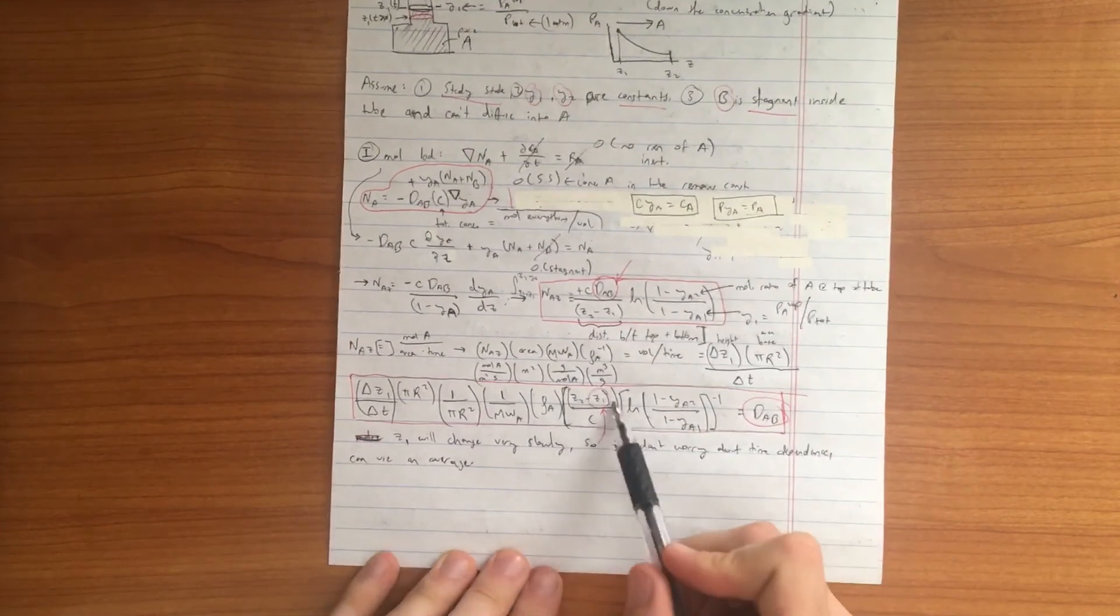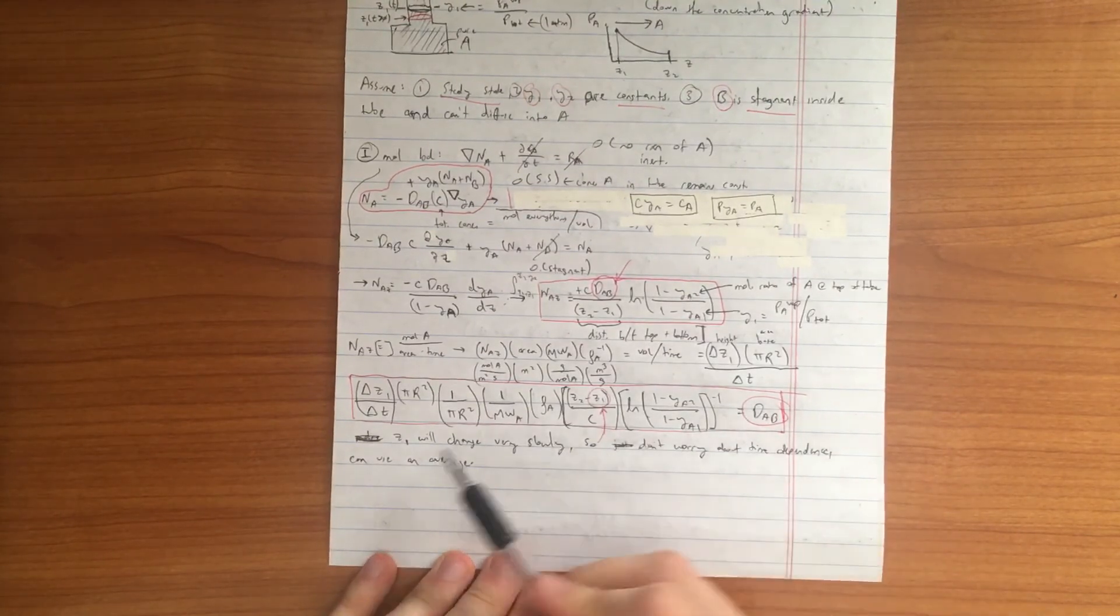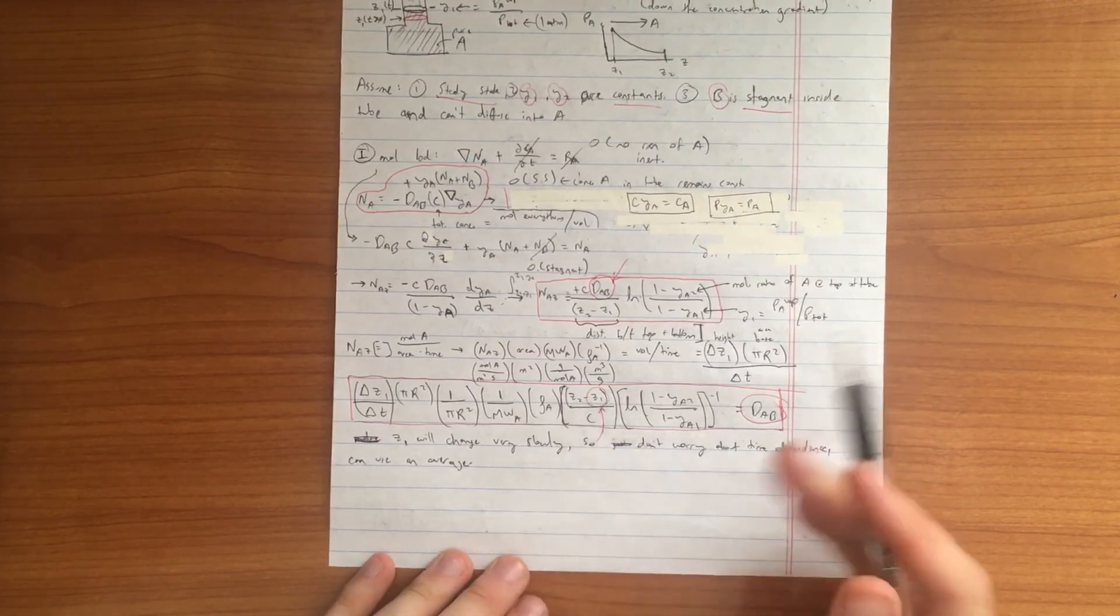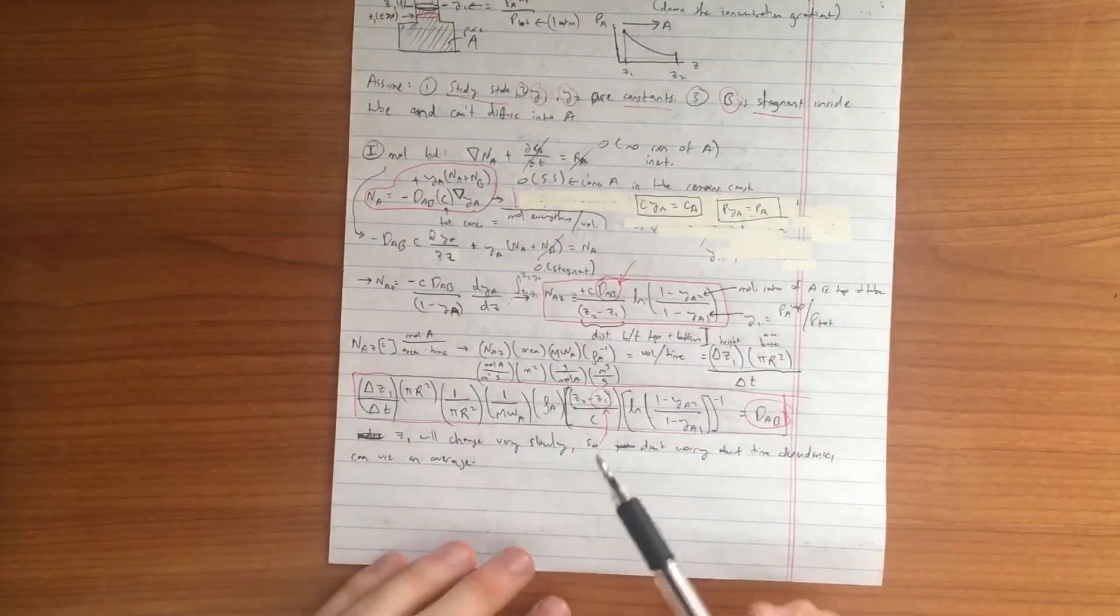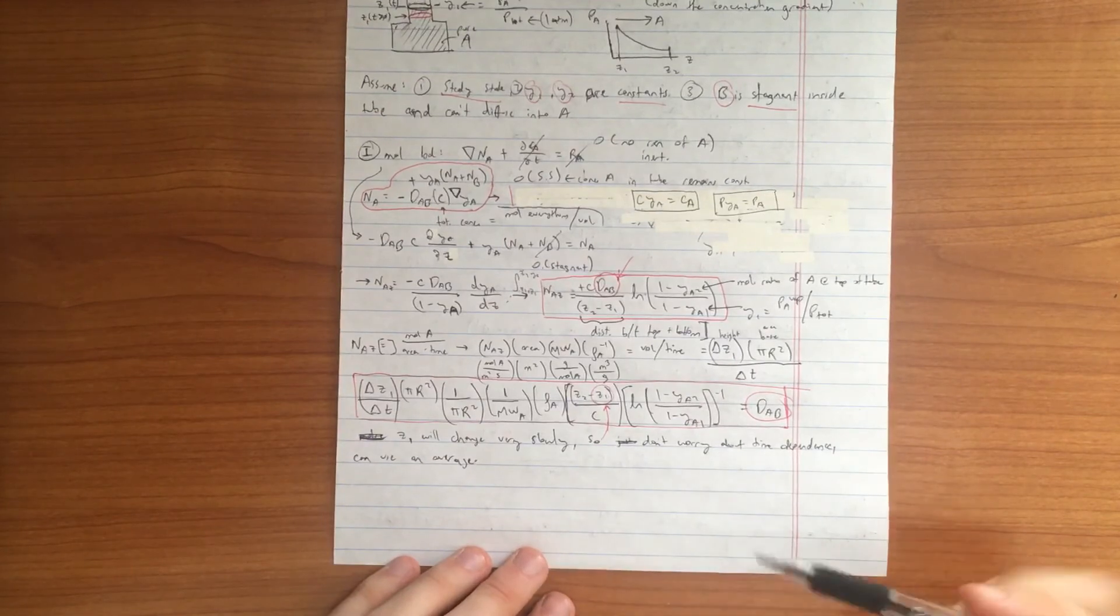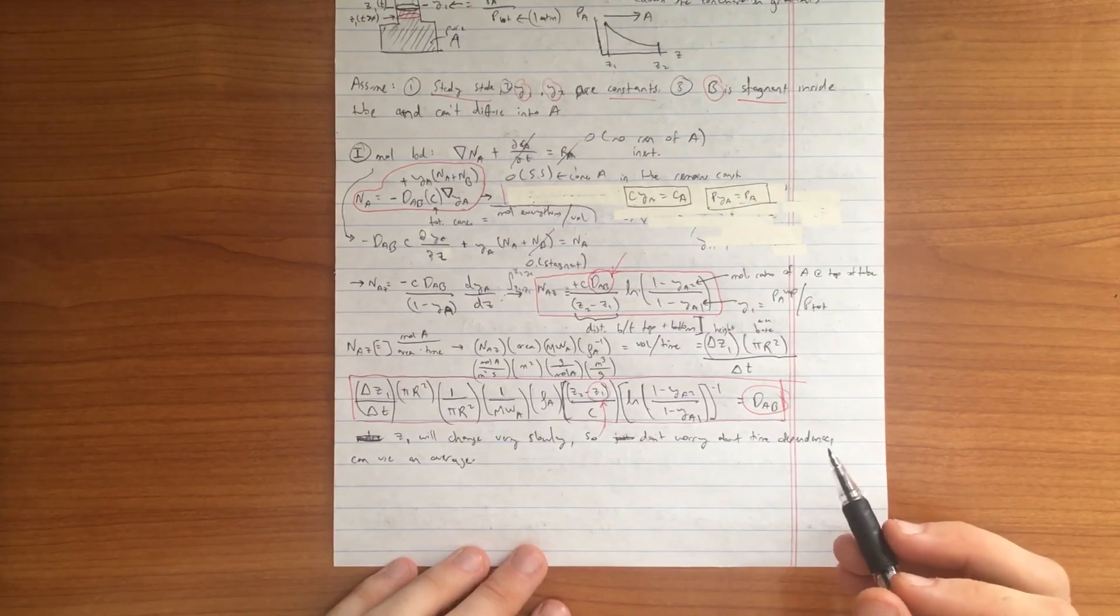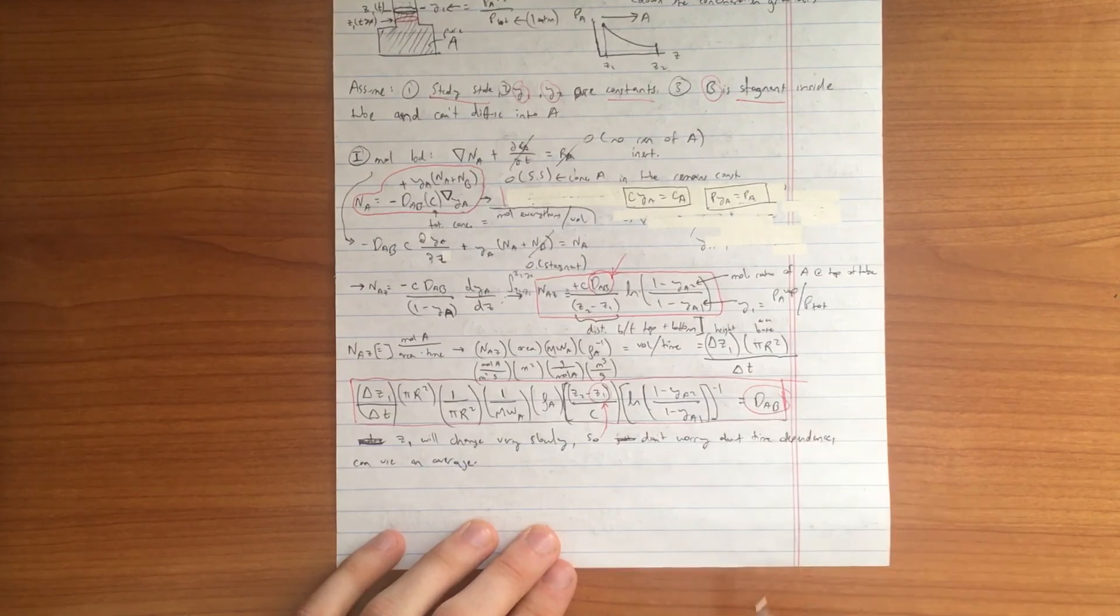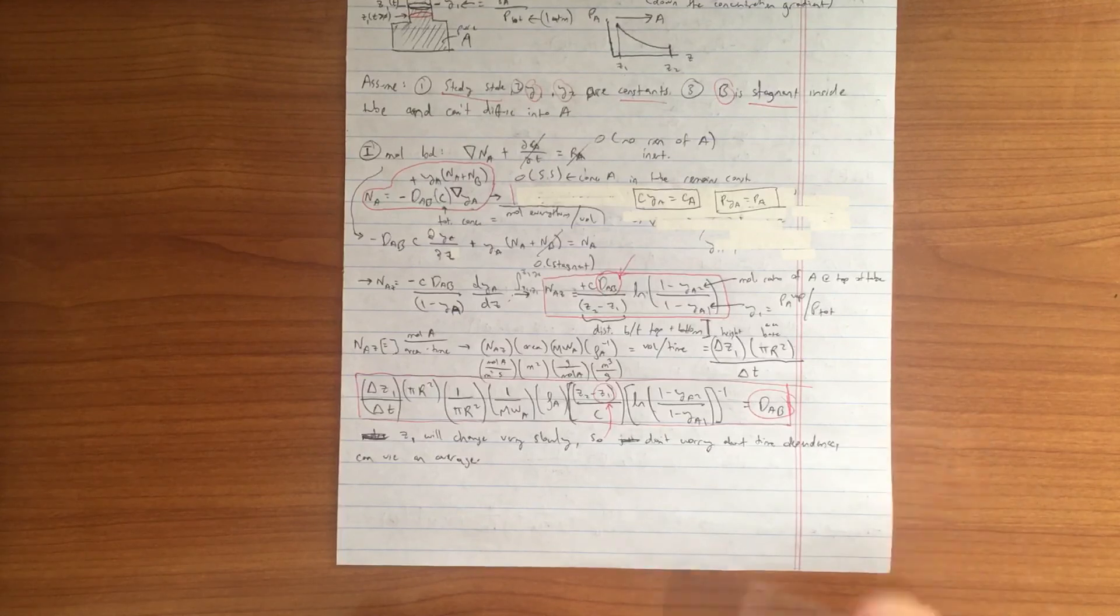If you are wondering what value of Z1 to use here, it is not too important because if we make the assumption that Z1 changes very slowly over time, if you used Z at T1 or Z at T2, it'll still be okay. Although you can time average it and that might improve your approximation as well, but it shouldn't make too big of a difference. And this tells you what DAB is. I hope you guys find this helpful. Let me know if you have any questions. Thanks for watching.